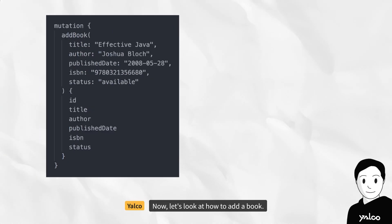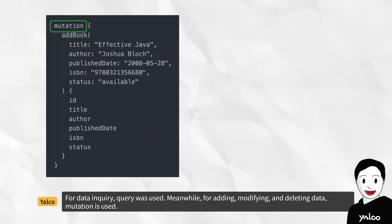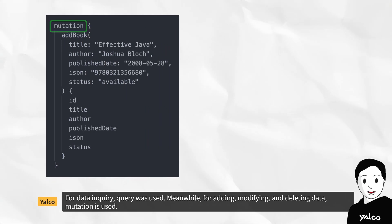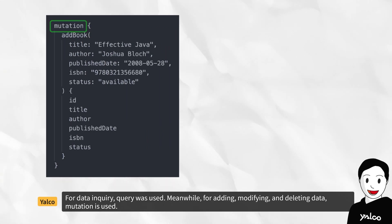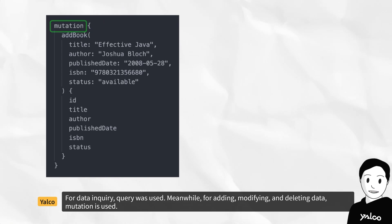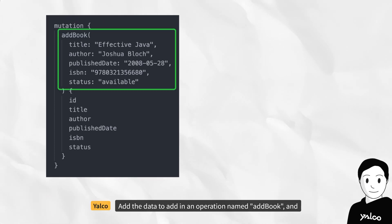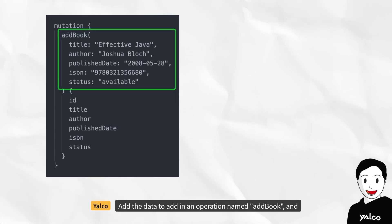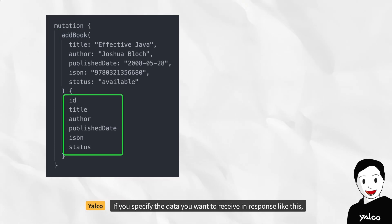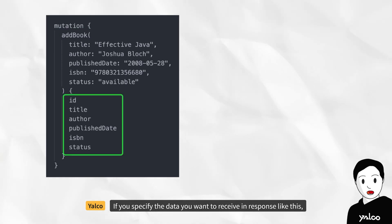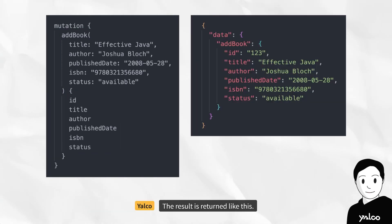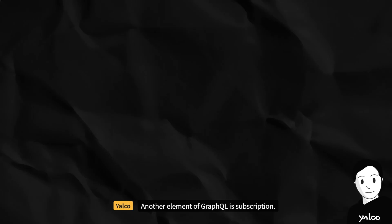Now let's look at how to add a book. For data inquiry, a query is used. Meanwhile, for adding, modifying, and deleting data, mutation is used. You add the data in an operation named addBook, and if you specify the data you want to receive in response, the result is returned accordingly.